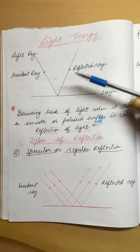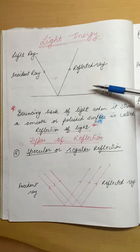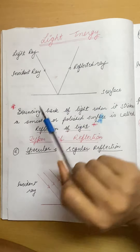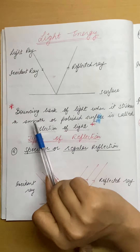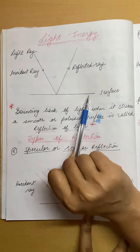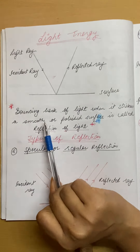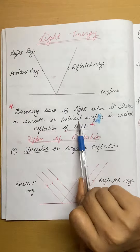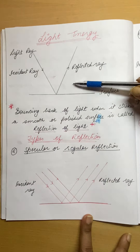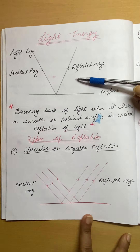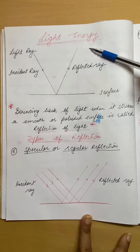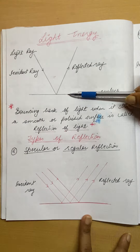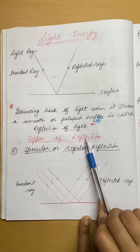So how will we define reflection of light? The bouncing back of light when it strikes a smooth or polished surface is called reflection of light.